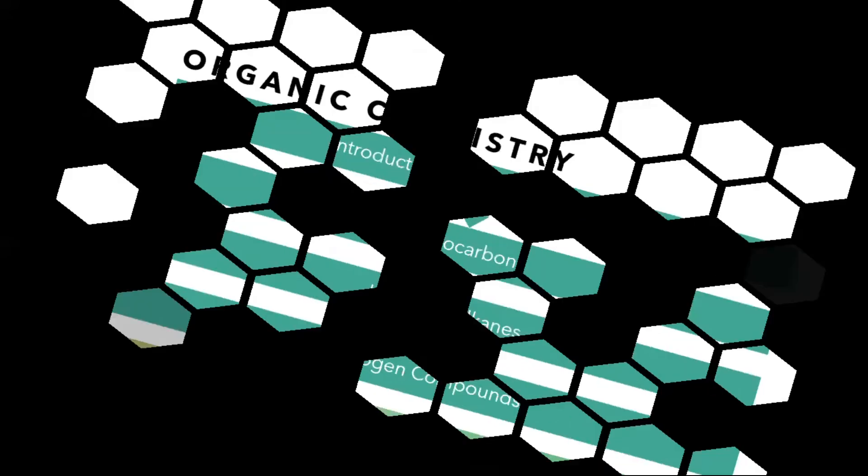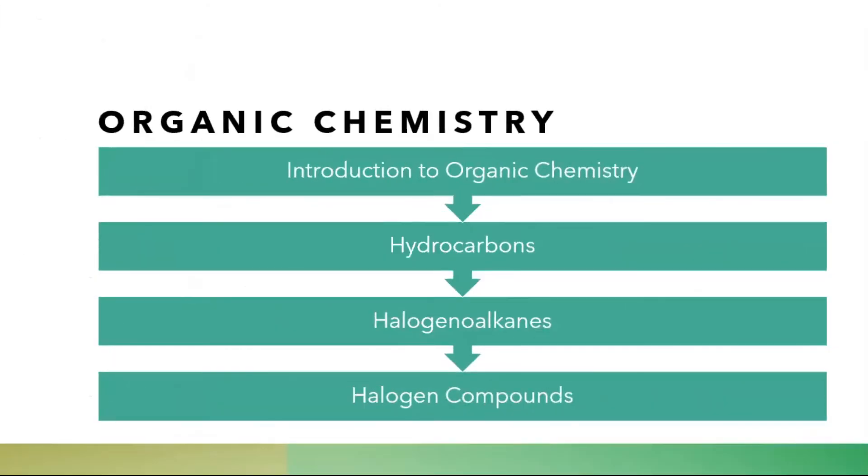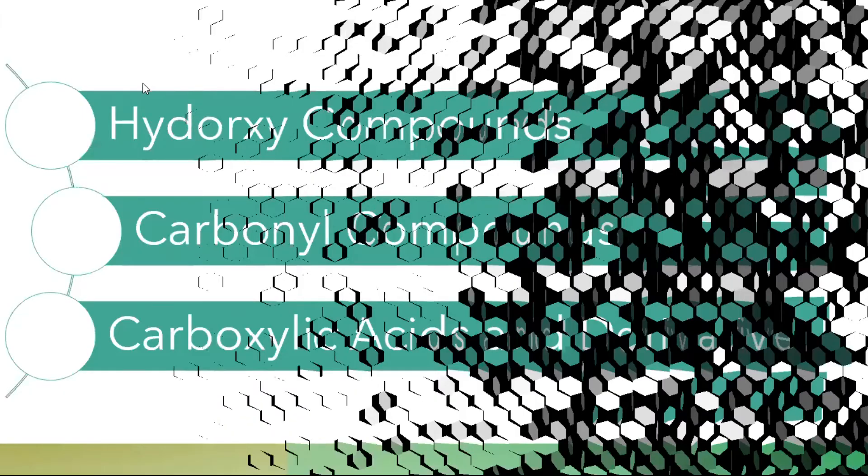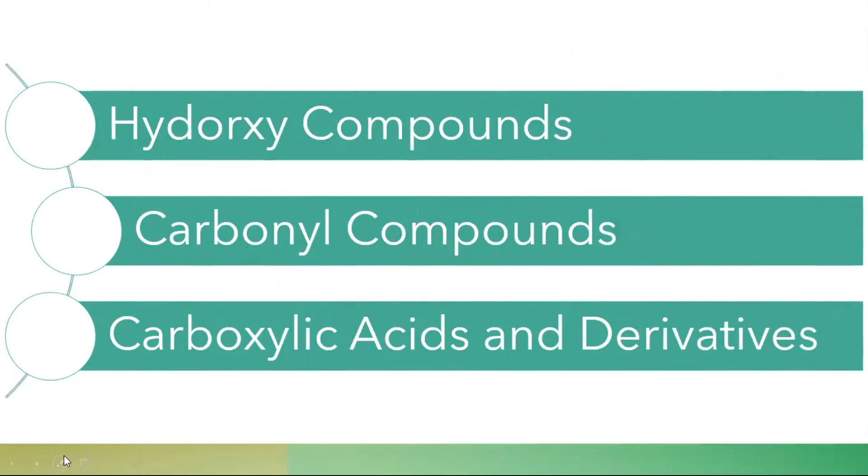After that, the next thing is the Organic chemistry. And in organic chemistry which are chapters? Introduction to organic, Hydrocarbons, Halogen alkanes, Halogen compounds, Hydroxide compounds, Carbonyl compounds, Carboxylic acids and derivatives.